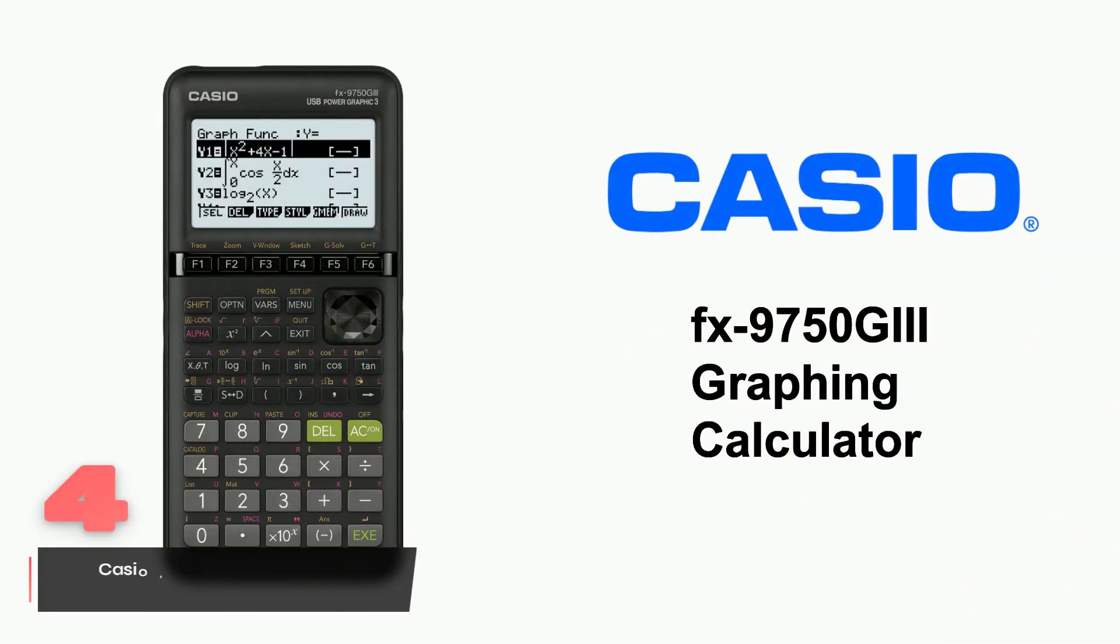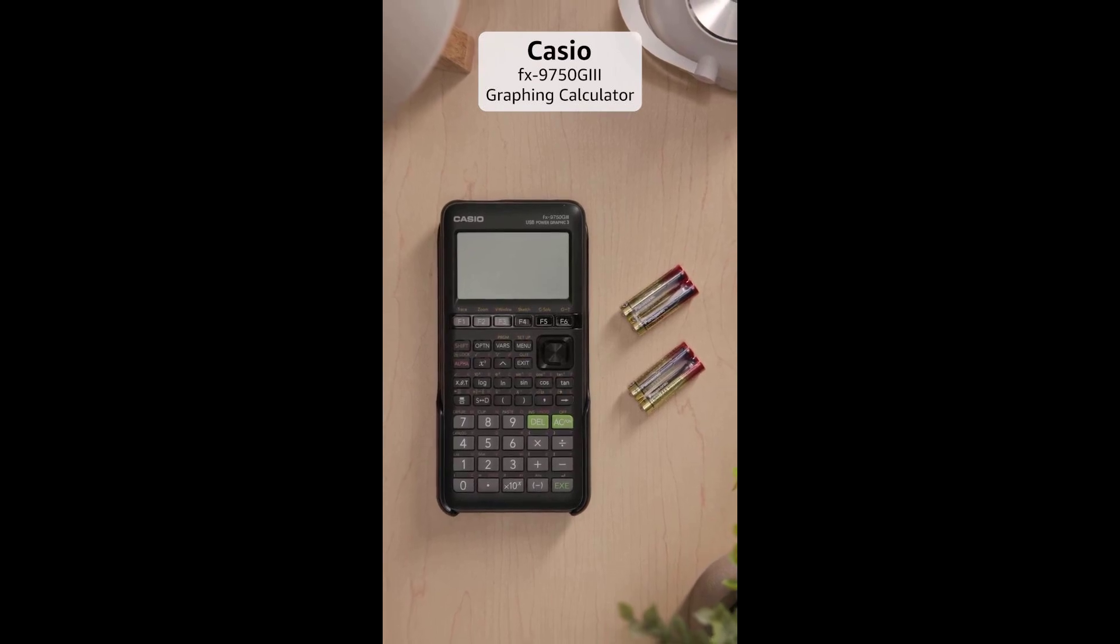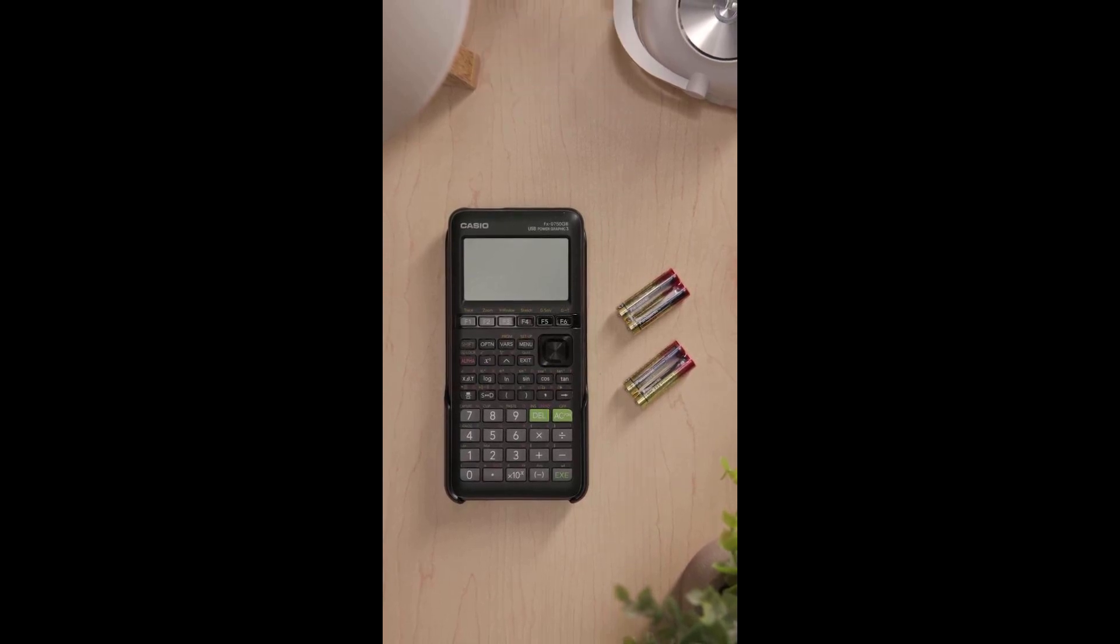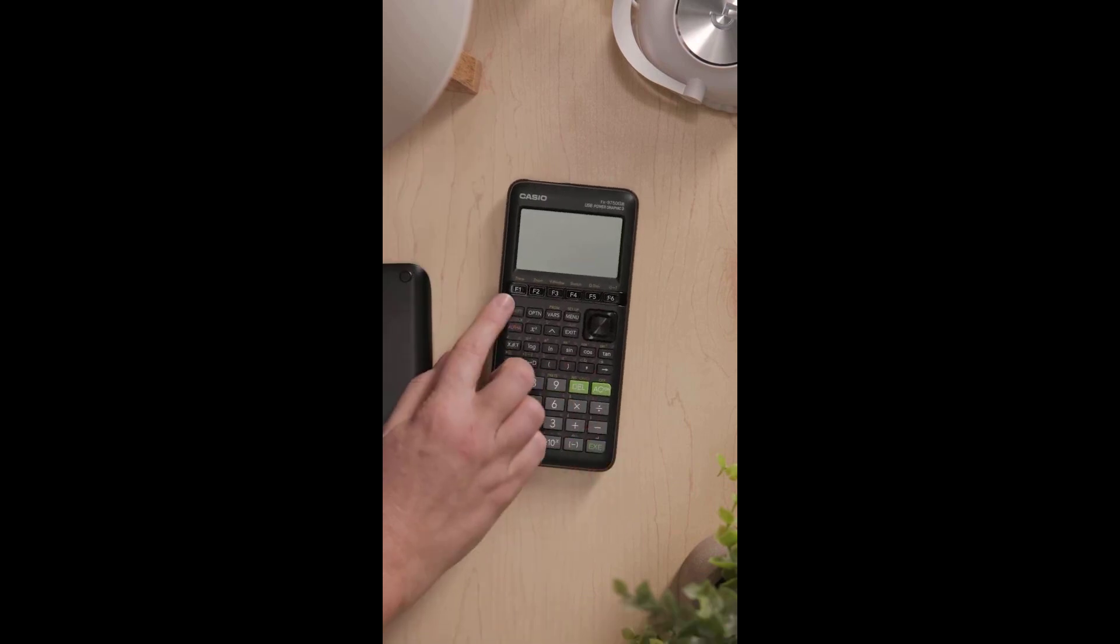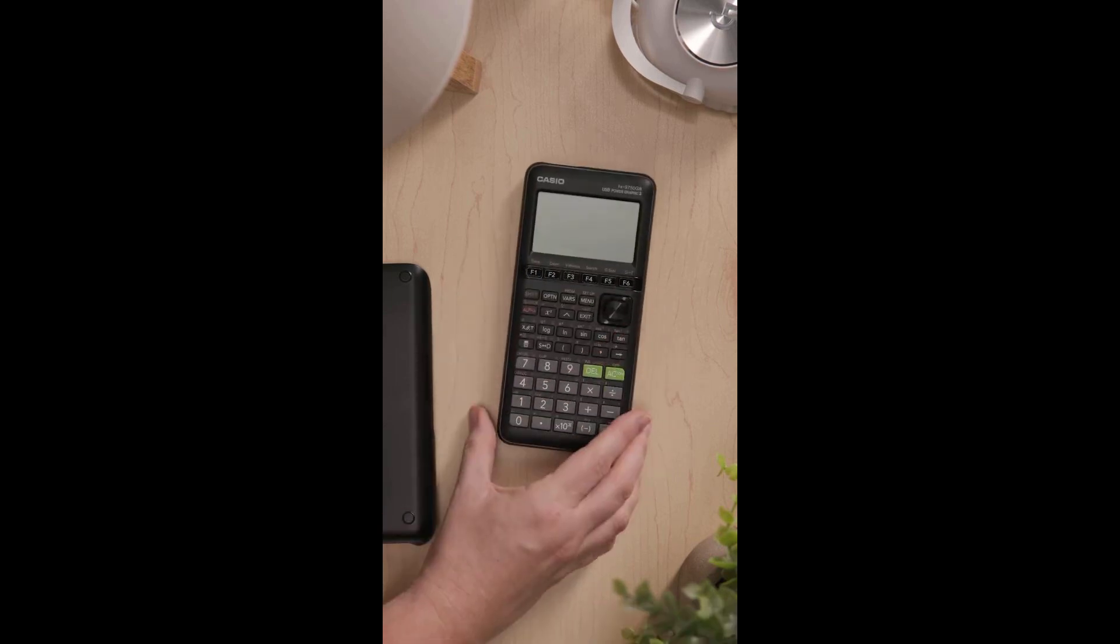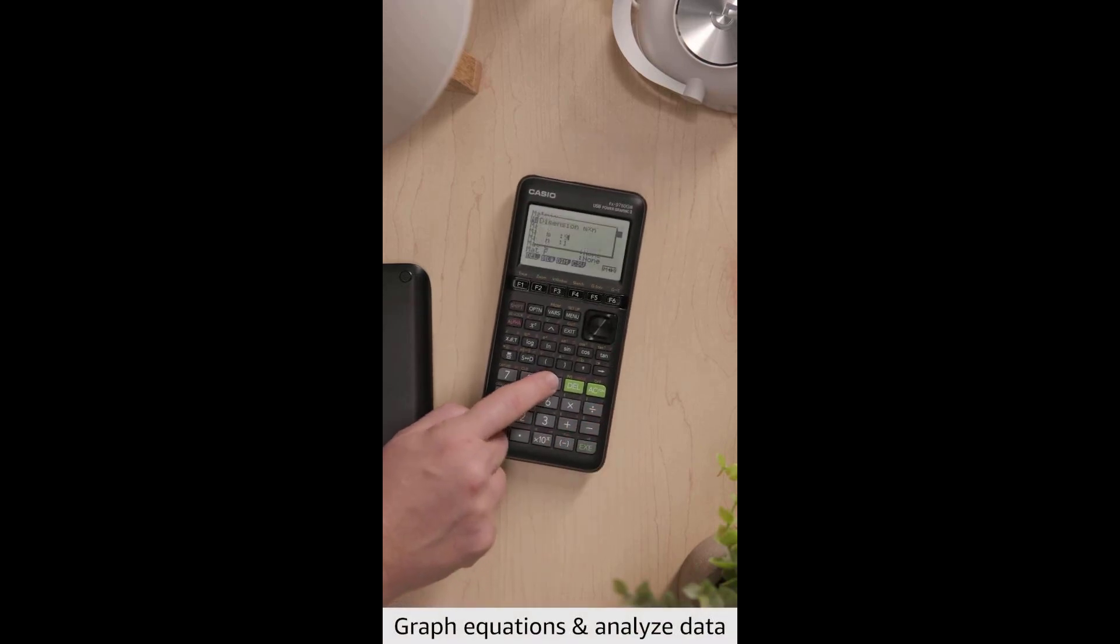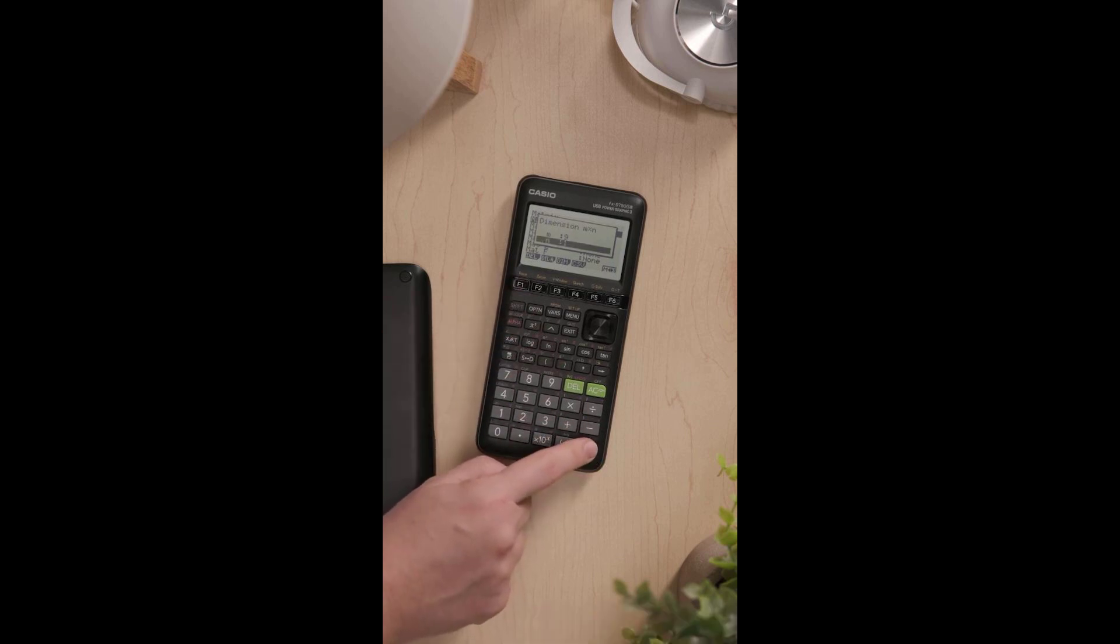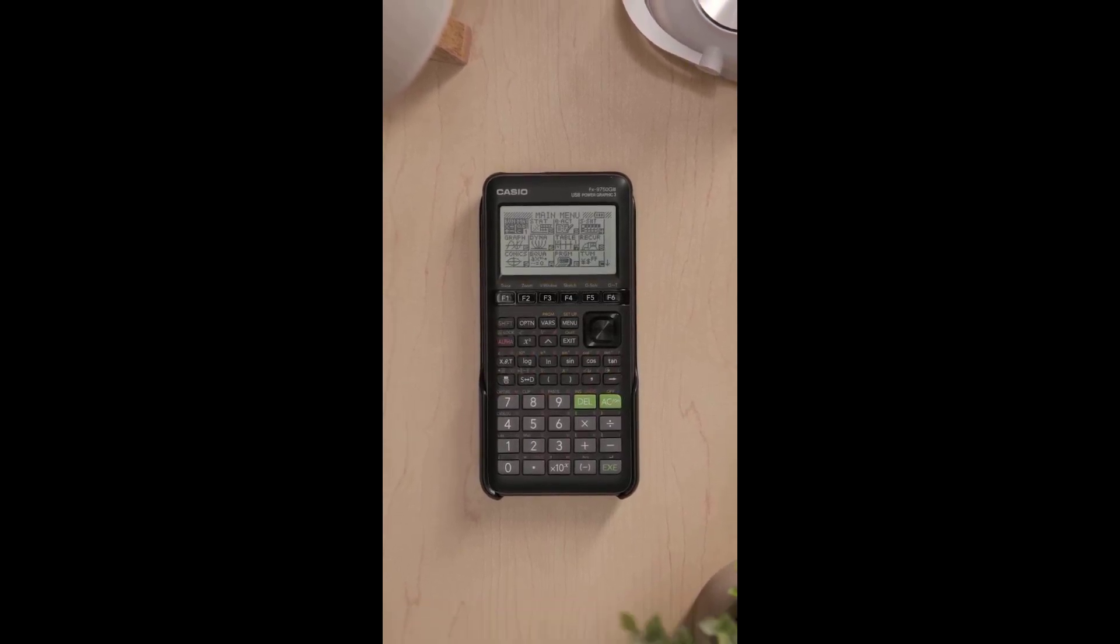The Casio FX-9750-GII-2 stands out as a calculator that addresses common math frustrations head-on. Anyone who's struggled with complex calculations knows how important clear visualization is, and this model delivers with its natural display that presents equations and fractions exactly as they appear in textbooks. This makes it significantly easier to follow along with challenging mathematical concepts. One of the standout features is the built-in rechargeable battery system. You won't have to worry about keeping spare batteries around or dealing with power issues during crucial study sessions. The display quality is exceptional too. I've tested it extensively in various lighting conditions, and the screen remains crisp and readable throughout.